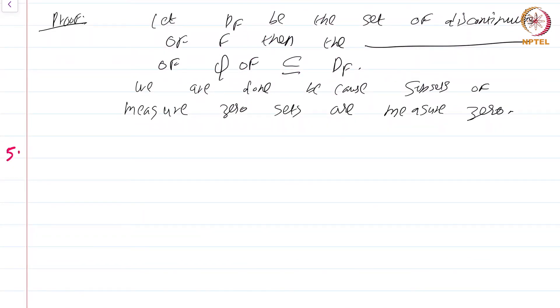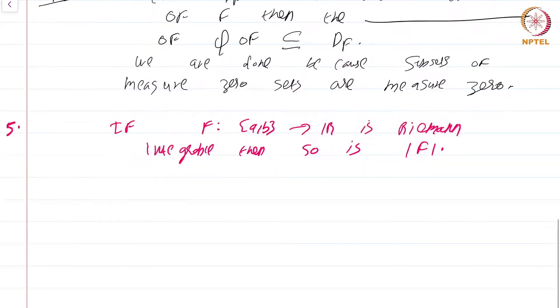Let us move on with the corollaries. Number 5: If f from [a,b] to R is Riemann integrable, then so is mod f. This is obvious because the modulus is a continuous function and you can treat modulus of f as absolute value composed with the function f and apply the previous corollary. So it follows immediately.